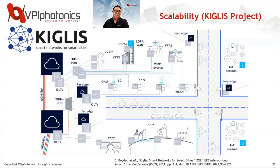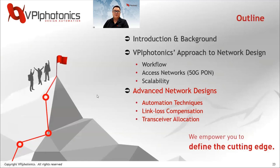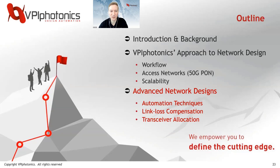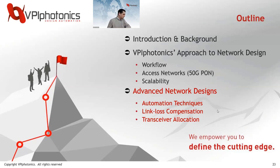That's from my side. Now I'll leave it to Dmitry. Thanks Xi for giving us the overview of the approach to network design, the workflow discussion, and the access network example. Now we're turning things over to Dmitry Komchenko, who will discuss advanced network designs specifically around automation techniques and discuss link loss compensation and transceiver allocation. We're now moving from access networks to core and metro networks, and we'll look at different design automation tools — some built-in and some custom — particularly for link loss compensation and transceiver allocation, most written using the API of VPI Link Configurator.